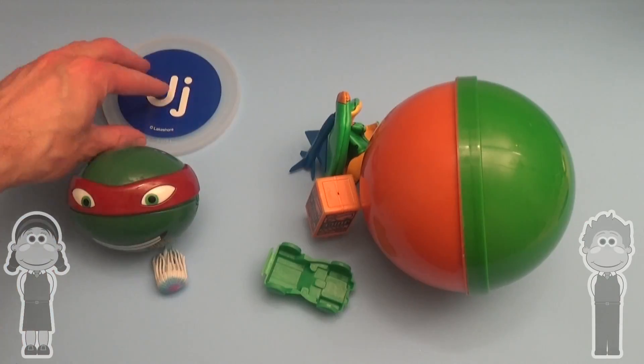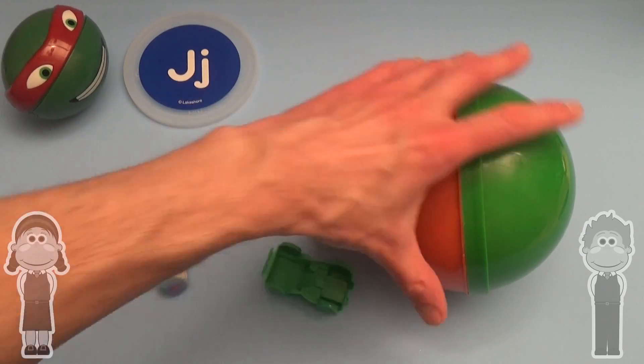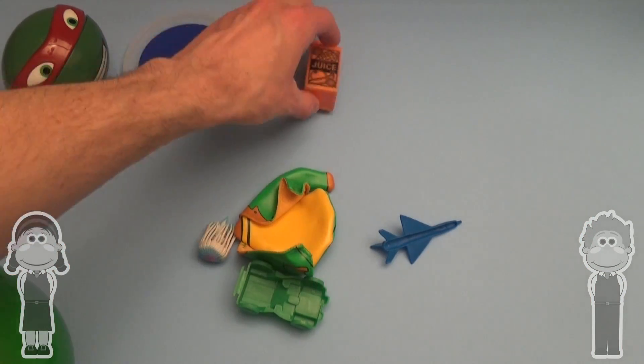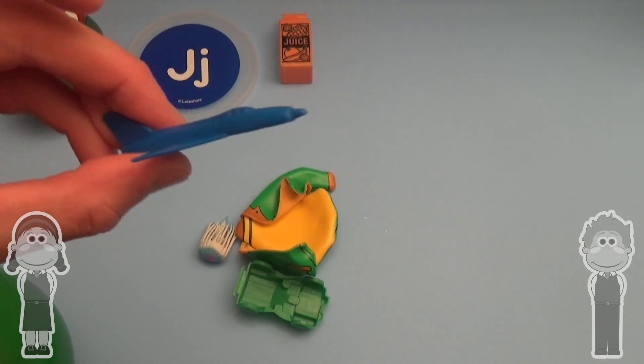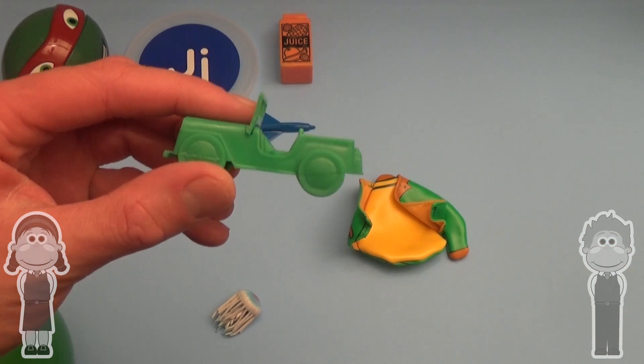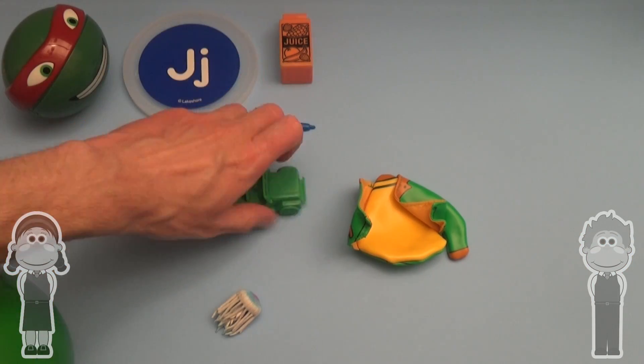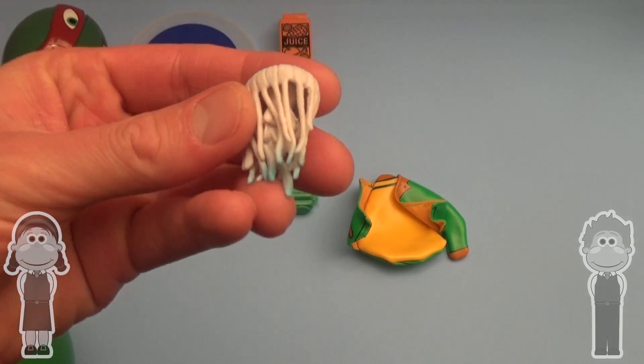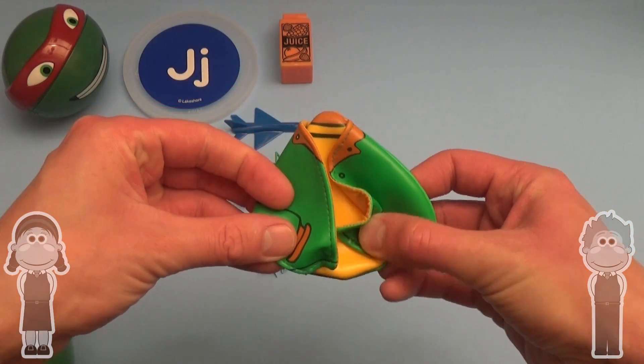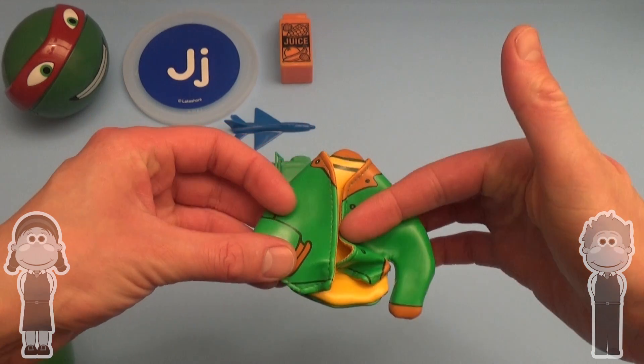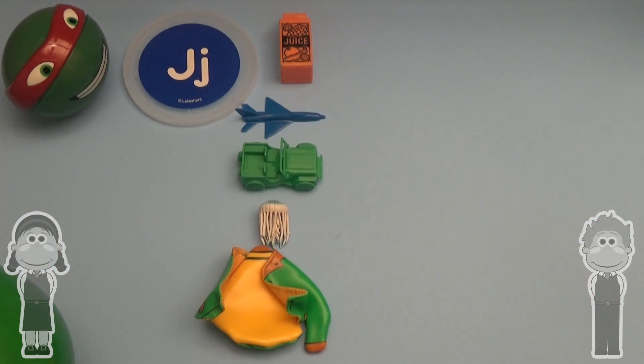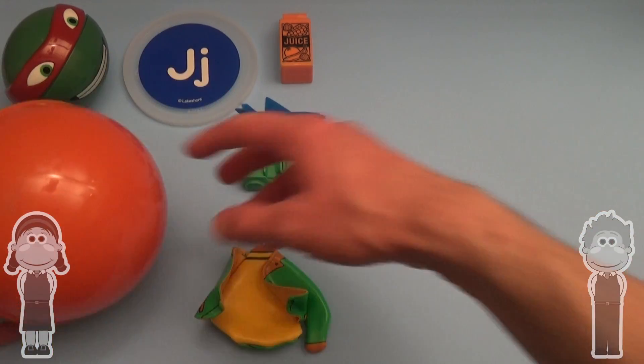Now let's check out these surprise toys that start with J. Yes! Now let's use our surprise letters and spell out these things that start with the letter J.